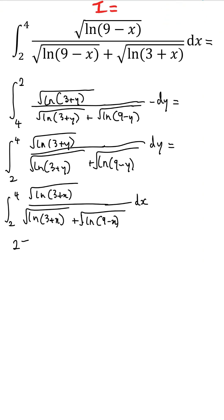So if we call the original integral I, we have that 2I is equal to the integral from 2 to 4 of the square root of log of 3 plus x plus the square root of log of 9 minus x all over the square root of log of 3 plus x plus the square root of log of 9 minus x.